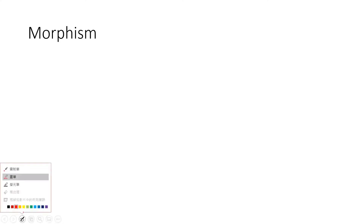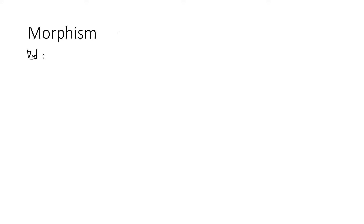Welcome guys, this is the second lecture of category theory. In this lecture I talk about morphisms. So the morphism means that for each two objects there will be an arrow, or there will be a morphism from A to B. Let's talk about the definitions — some definitions are very important. The first two are monomorphism and epimorphism.